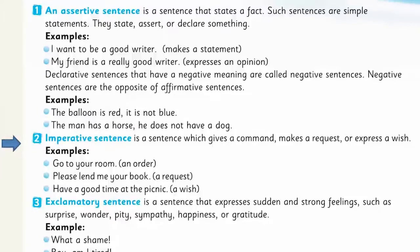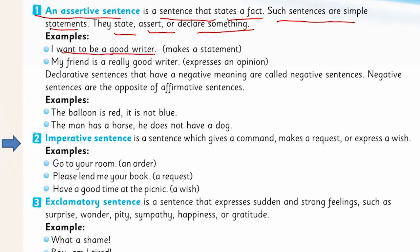An assertive sentence is a sentence that states a fact. Such sentences are simple statements — they state, assert, or declare something. They tell you about something, give a statement, or declare something. For example: 'I want to be a good doctor.' It is a declarative sentence — this person is declaring something about himself.